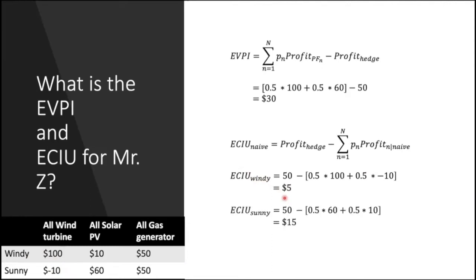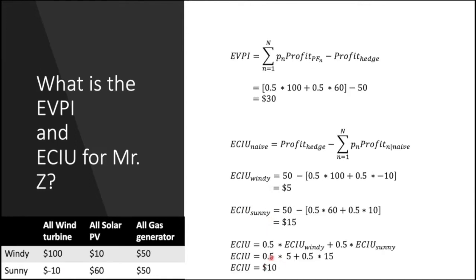Similarly, if we make a decision assuming tomorrow is sunny, the decision maker could potentially lose $15. The probability-weighted average of these two is $10. As a consultant, if I tell Mr. Z I can do stochastic programming analysis that gives him a hedging strategy to save potential losses, the maximum he would pay me is $10 — because that's the maximum he could lose by ignoring uncertainty.